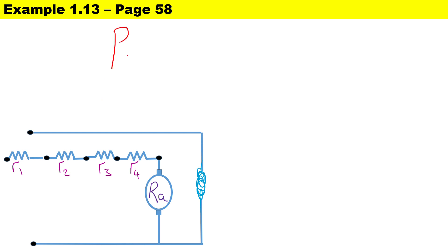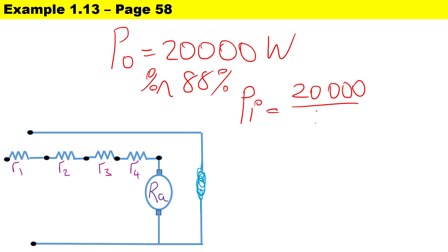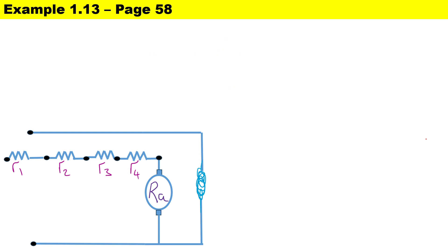First, we'll figure out the different powers for our circuit. Our output rating is 20,000 watts at an efficiency of 88%. Therefore, to calculate the input power it is 20,000 divided by 0.88, and we end up with an input power of 22,727.27 watts.